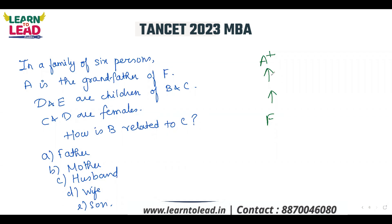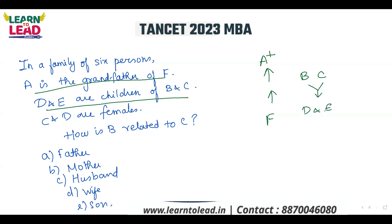D and E are children of B and C. C and D are females — so C is female and D is female. B and C are the parents of D and E, so B and C are husband and wife. You should represent it with double arrows. C is female and B is male. So how is B related to C? B is the husband of C. That's all.